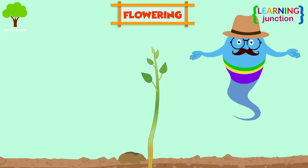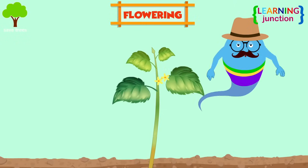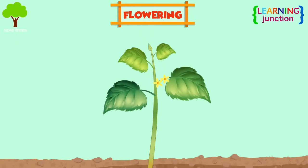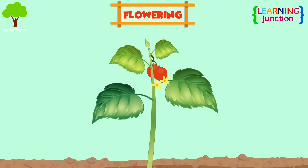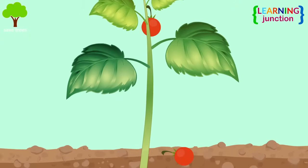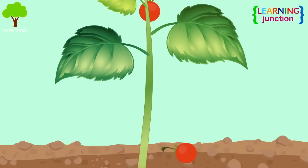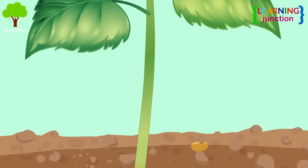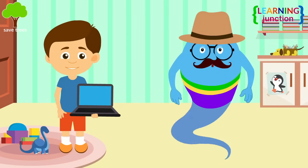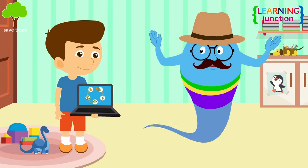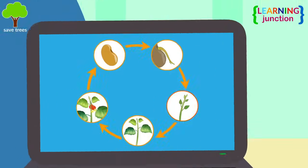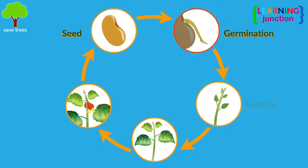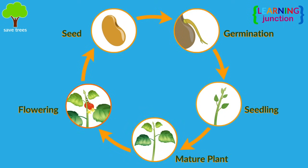Flowering: the mature plant grows flowers, which will produce seeds through pollination. When the seeds end up on the ground, the life cycle starts all over again. The diagram shows the full cycle: seed, germination, seedling, mature plant, and flowering — and then the same repeats again.